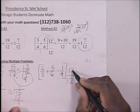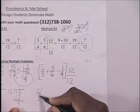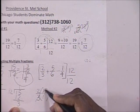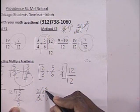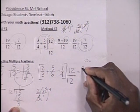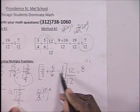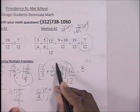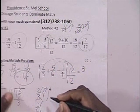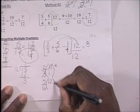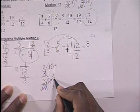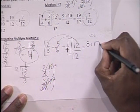We multiply 2 thirds times 12 — the 3 cancels with the 12, leaving 4 — and you end up with 4 times 2, which is 8. Then multiply 5 sixths times 12 — the 6 cancels with the 12, leaving 2 — and you're left with 5 times 2, which is 10. So you have plus 10.